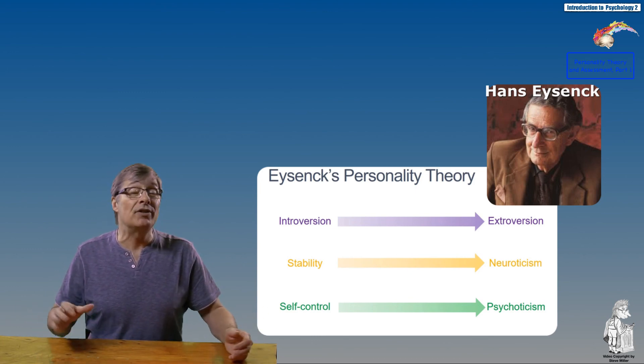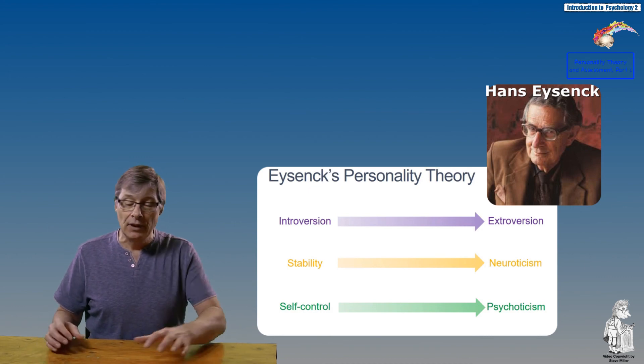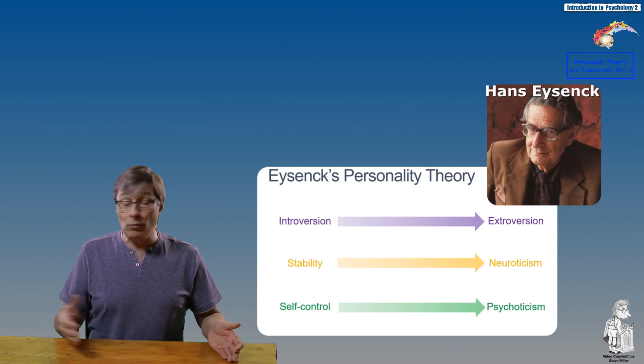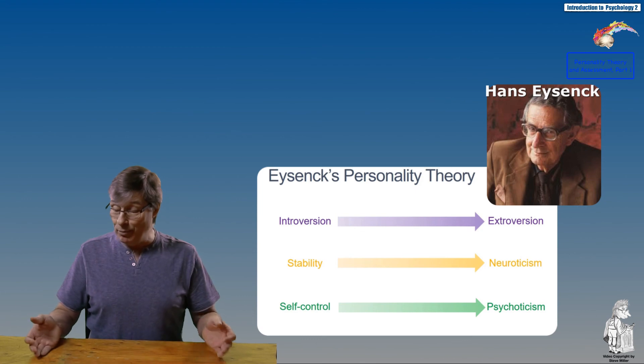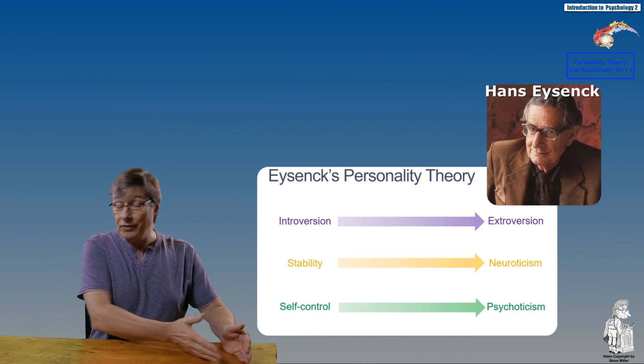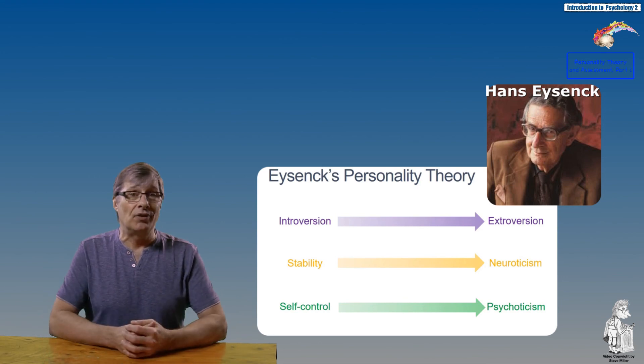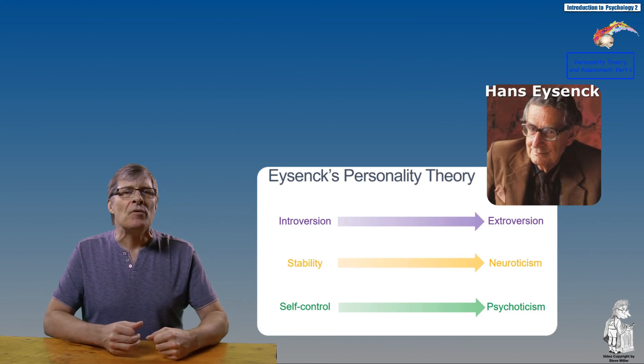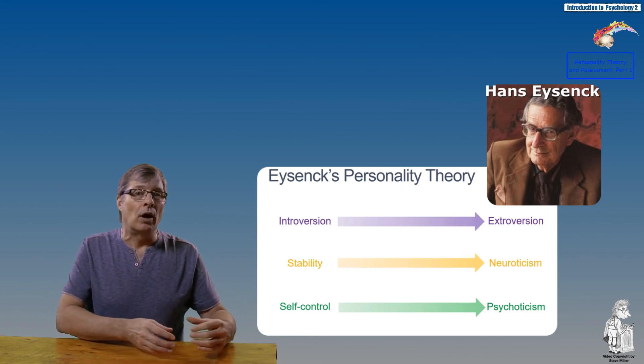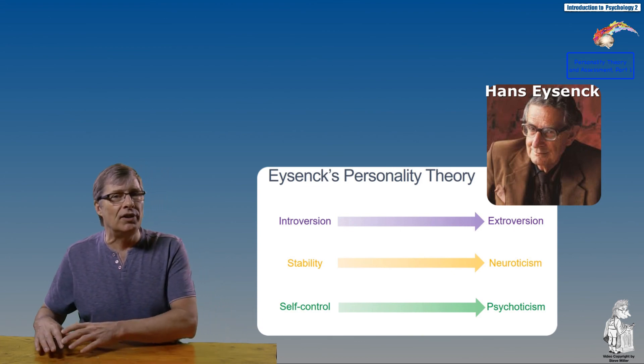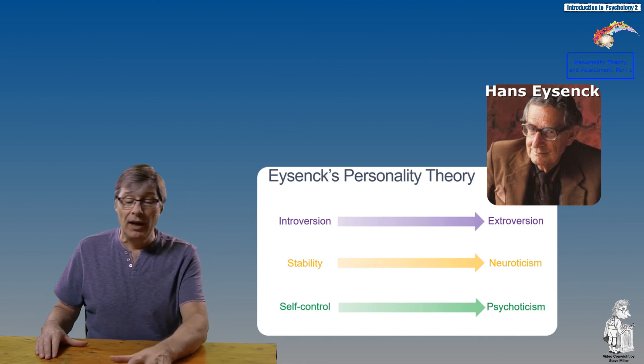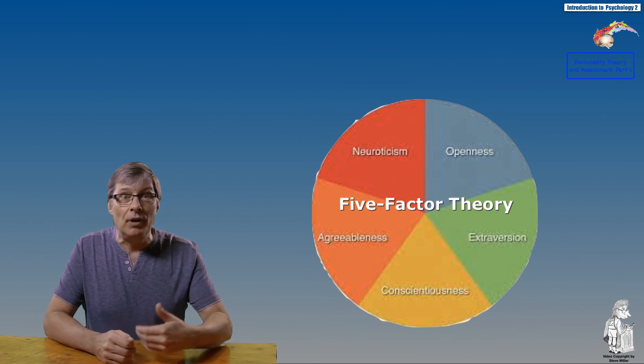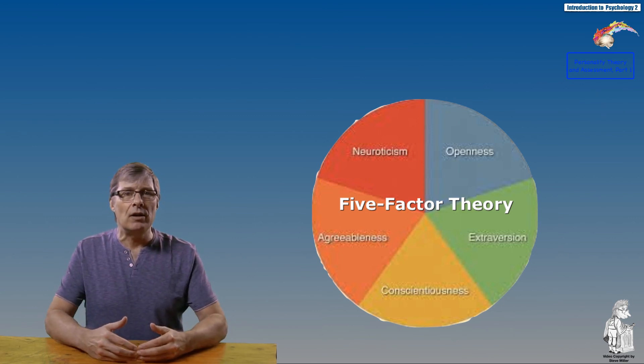The second dimension is extroversion versus introversion. Extroverts are sociable, outgoing, and active, whereas introverts are more withdrawn, quiet, and introspective. It's important to note it's not better being on one side of the spectrum or the other—people equally successful in life can be anywhere on this continuum. The third is neuroticism versus emotional stability. Unstable or neurotic people are anxious, excitable, and easily distressed, whereas emotionally stable people are calm, even-tempered, and more easygoing.